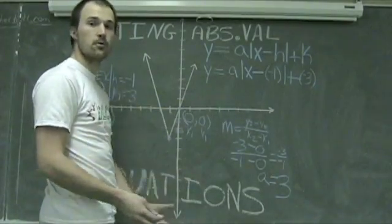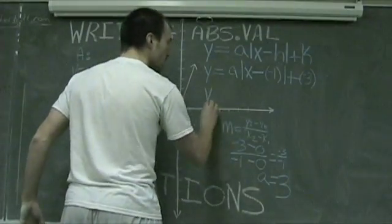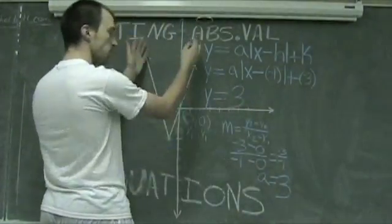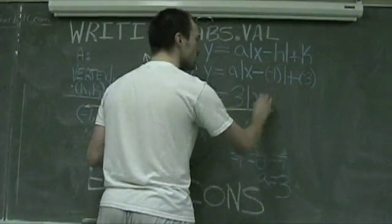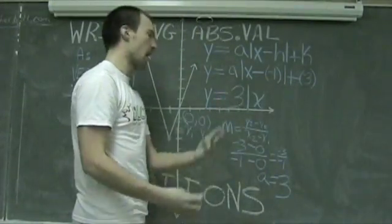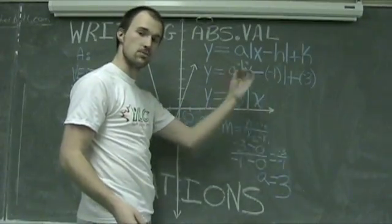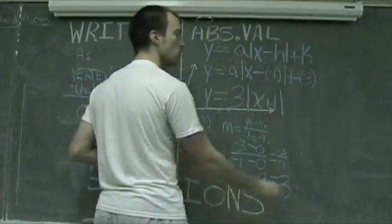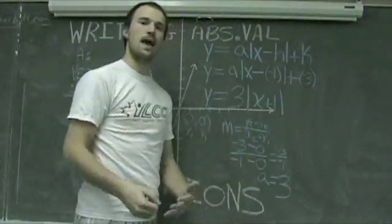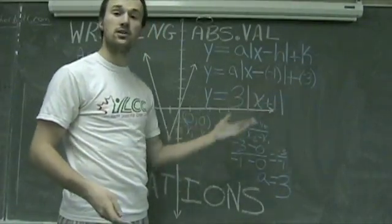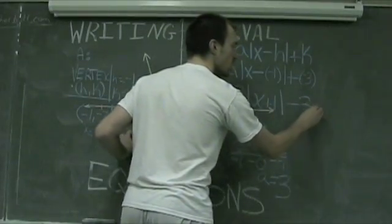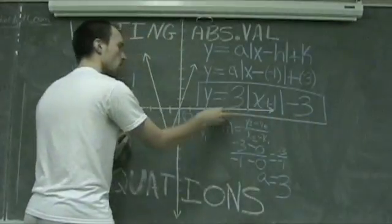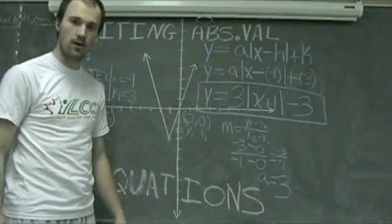We can now go and fill in for our last variable, and then we've finished. Y is equal to, we know now that A is equal to three, so it's three, because it opens up, and it has a slope of three, times the absolute value of X, minus a negative one, I might as well just call that plus one, because subtracting a negative, same thing as adding, plus one, close my absolute value, plus a negative three, if I'm adding negative numbers, I might as well be subtracting, and so we'll call it just that, we subtract three, and now we have solved from the equation of this absolute value graph.